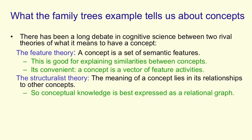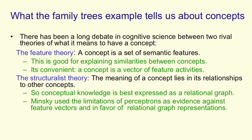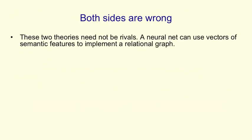In the early 1970s, Marvin Minsky used the limitations of perceptrons as evidence against feature vectors and in favor of relational graph representations. My belief is that both sides in this debate are wrong, because both sides believe that the two theories are rivals — and they're not rivals at all.